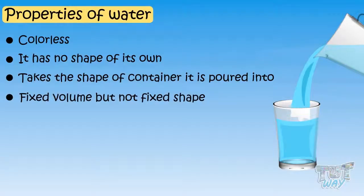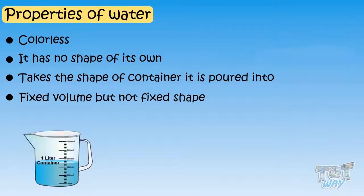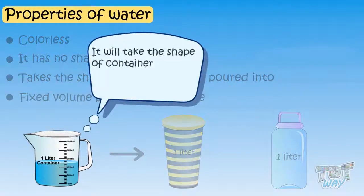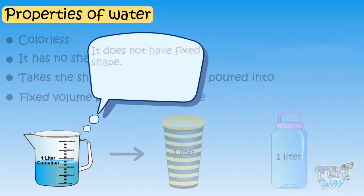Let's try to understand this. If you have one liter of water, it will remain one liter of water, no matter in which container you keep it. So its volume is fixed. But it will take the shape of the container in which you keep it. That is, it does not have a fixed shape.